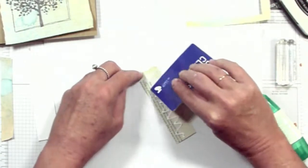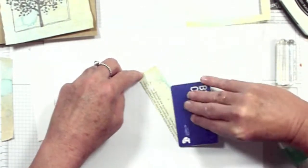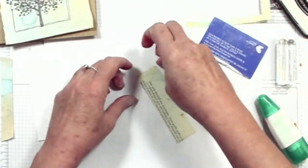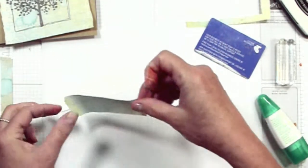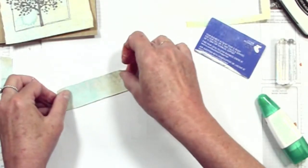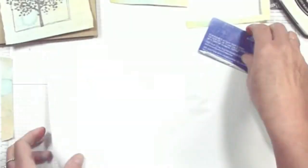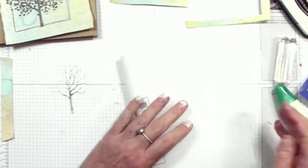Then grab your scraper or your credit card and just smooth it all out. You want to make sure that you get all the edges. And pop it onto the piece of whisper white card. Clean off your credit card and get rid of that paper because it's got glue all over it now and anything that you put on there is going to stick to it.